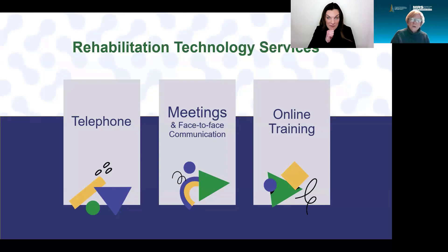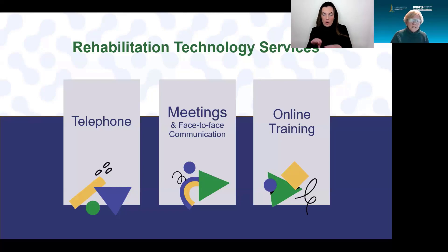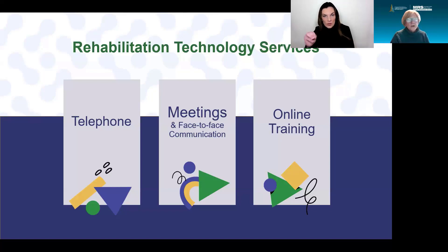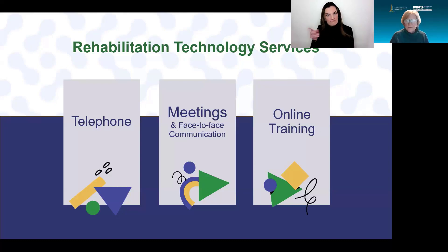For meetings and face-to-face communication, there's a wide range of amplification devices including looping meeting rooms, use of microphones for the speaker, and table microphones for group conversations. CART transcription and ASL interpreters are also important for meetings. For online training, both closed captioning and open captioning should be on all training materials. Real-time AI-based captioning in Teams and Zoom is available but not as accurate as a professional transcriptionist. American Sign Language interpretation and written transcripts can also support online training.